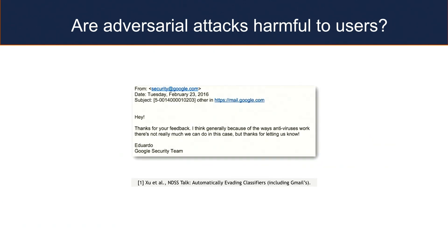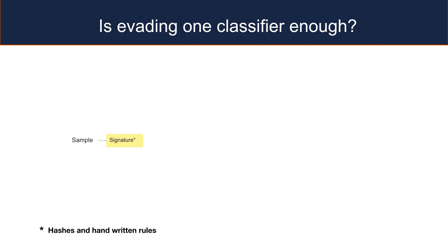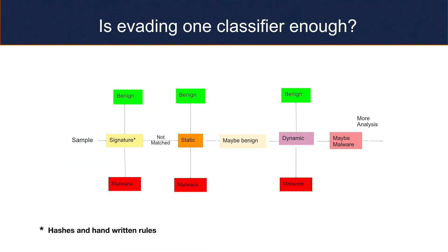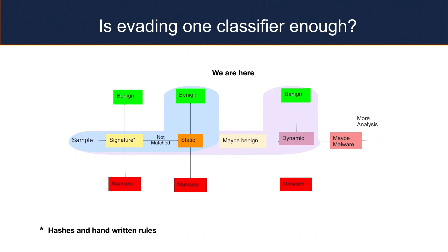Another reason academics do adversarial attacks without industry impact is that evading one classifier is often not enough to evade the entire pipeline. Commercial antivirus products go through a series of detections — signature-based, static, and dynamic detection. You can do an adversarial attack that evades static detection, but if you click and run the malware, it will get detected by the dynamic analyzer. So in the research case, we show the static detector was evaded, but we can't show the malware actually runs and is harmful. As far as antiviruses are concerned, adversarial attacks are still not harmful to users.